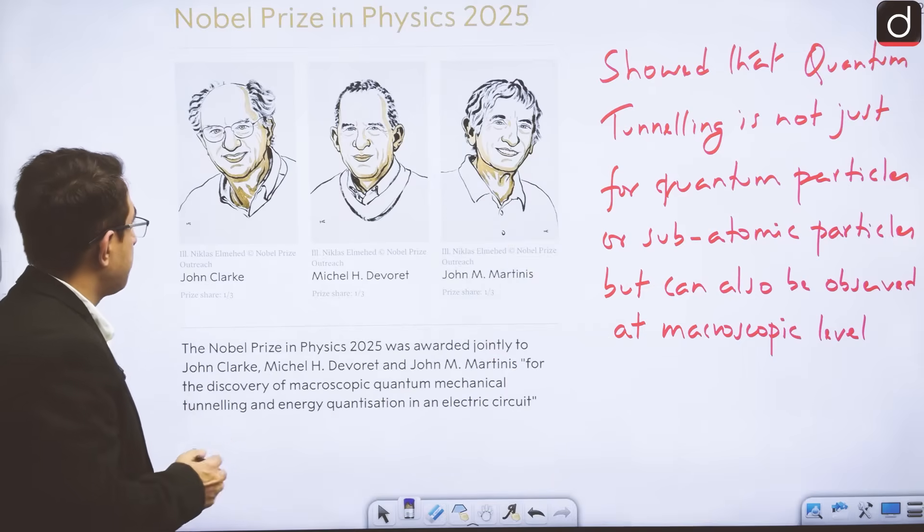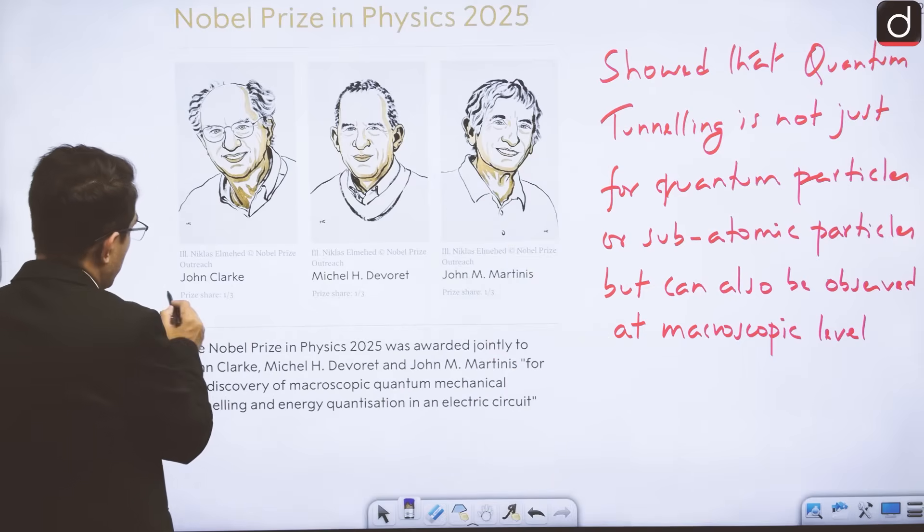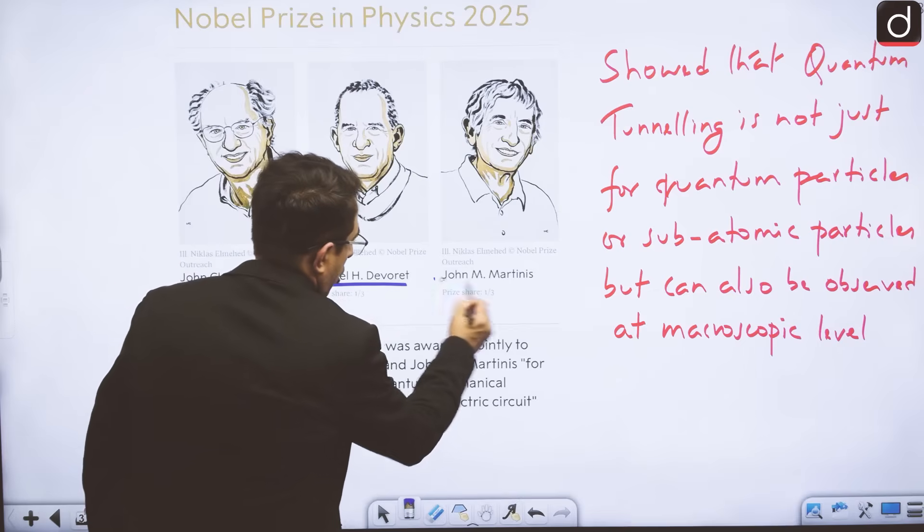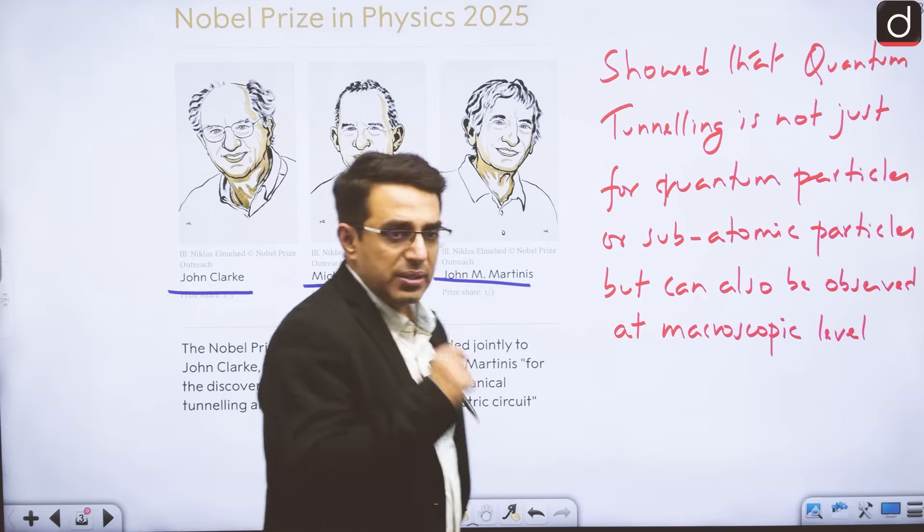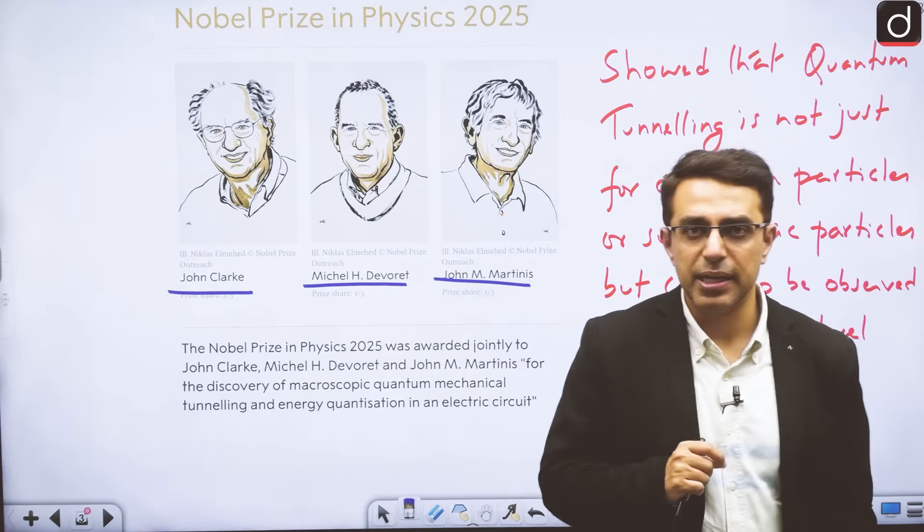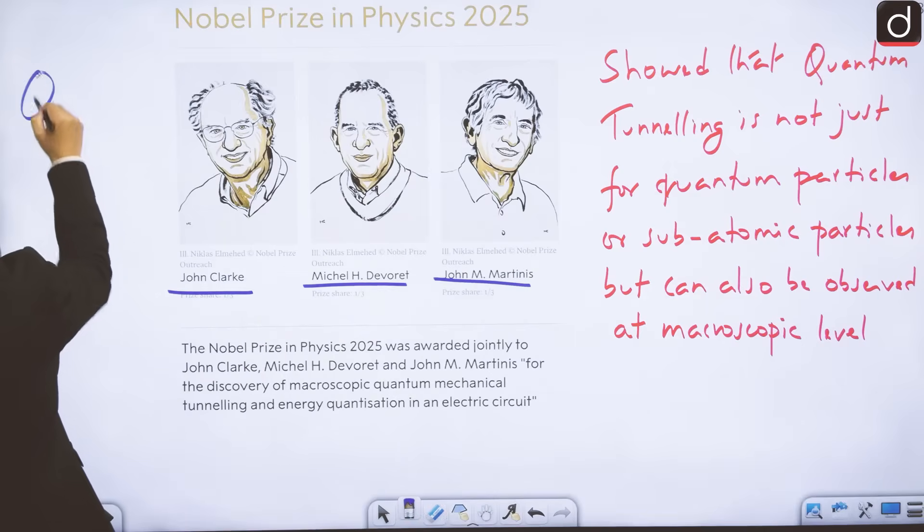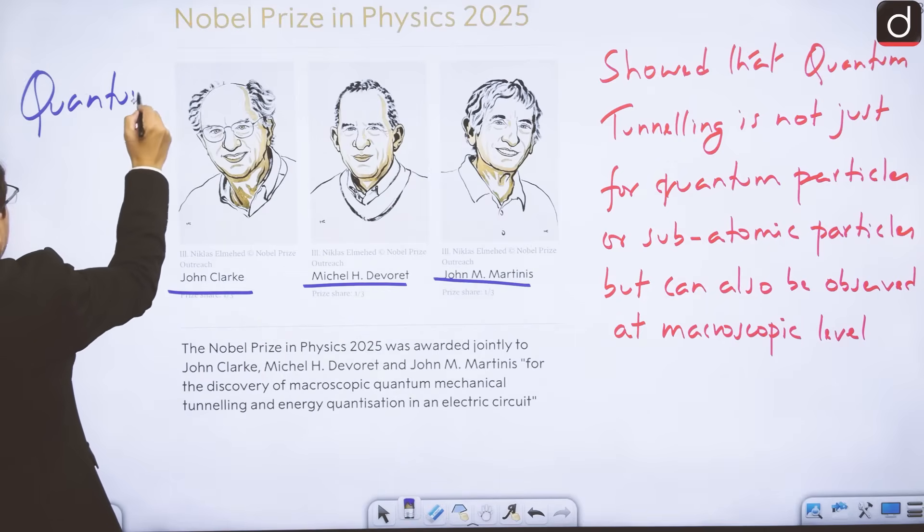For medicine, we need to remember that it was given for the discovery of regulatory T cells, which are regulated by the FOX P3 genes. This is basically related to our immune system - it should not be attacking the healthy body cells. Now we come to the Nobel Prize in physics. This has been given to John Clarke, Michel Davoret and John Martinez. The physics Nobel has been given for a phenomenon which is known as quantum tunneling.